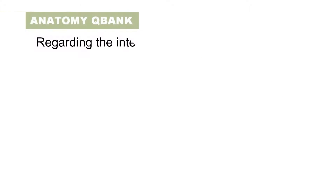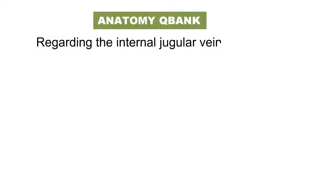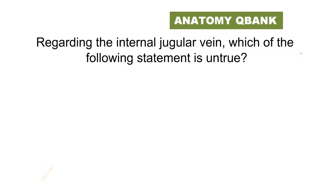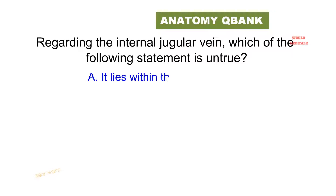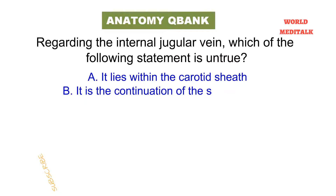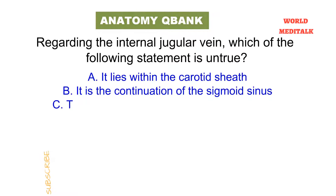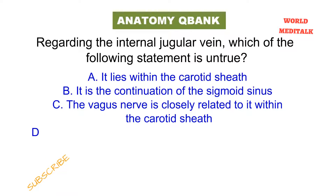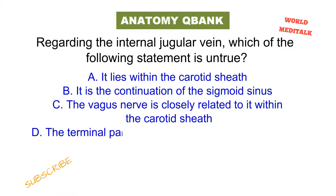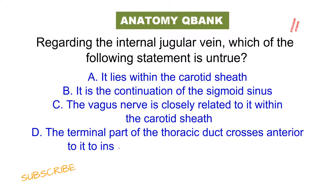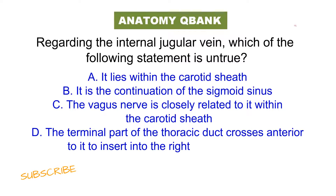Regarding the internal jugular vein, which of the following statements is untrue? It lies within the carotid sheath. It is the continuation of the sigmoid sinus. The vagus nerve is closely related to it within the carotid sheath. The terminal part of the thoracic duct crosses anterior to it and inserts into the right subclavian vein.